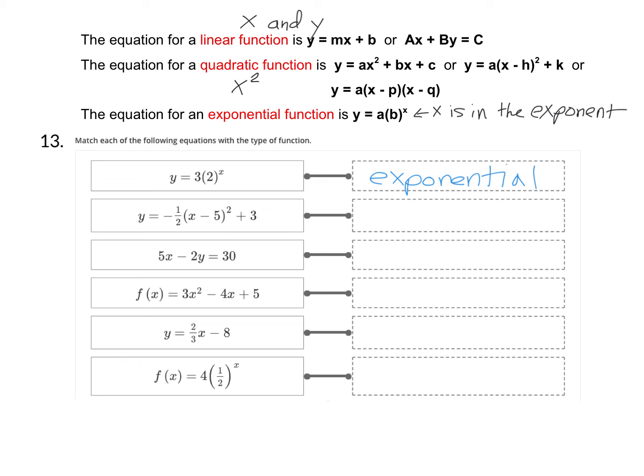The next graph we can see has x minus 5 in parentheses squared. That's your vertex form. Here's the h and the k and the a value. This is a quadratic.